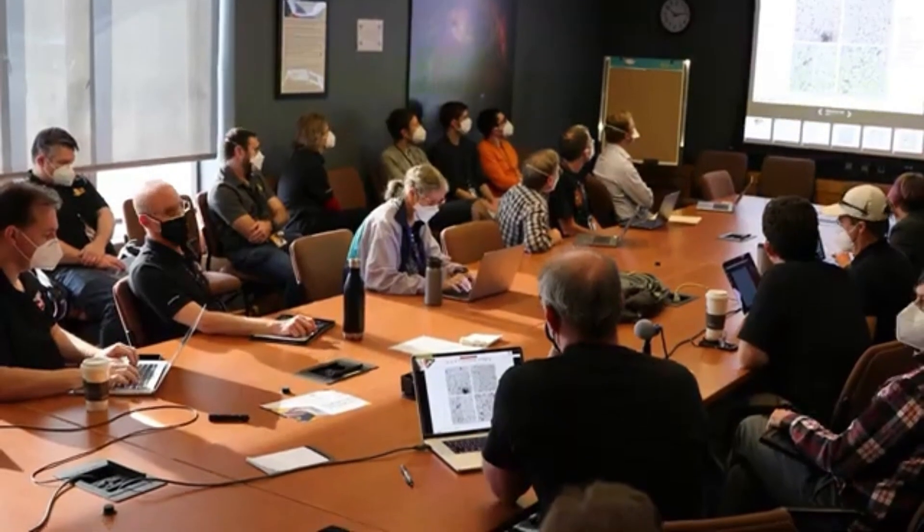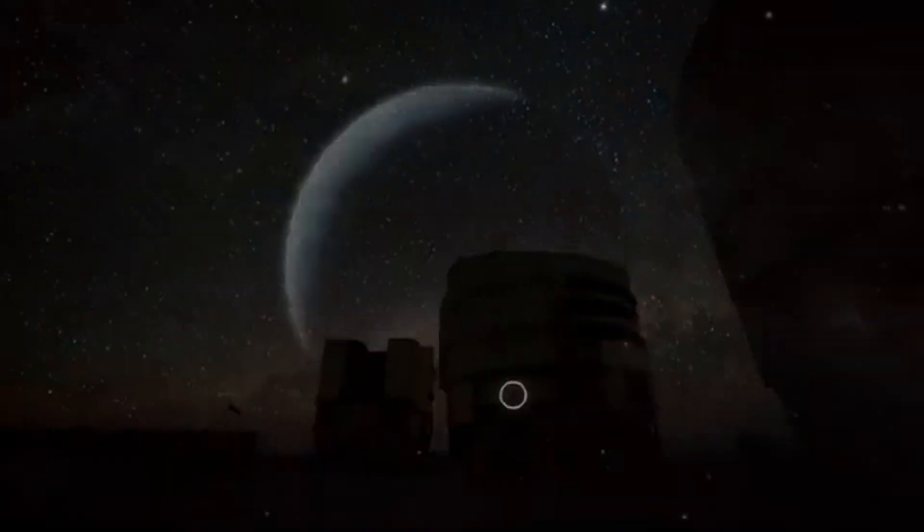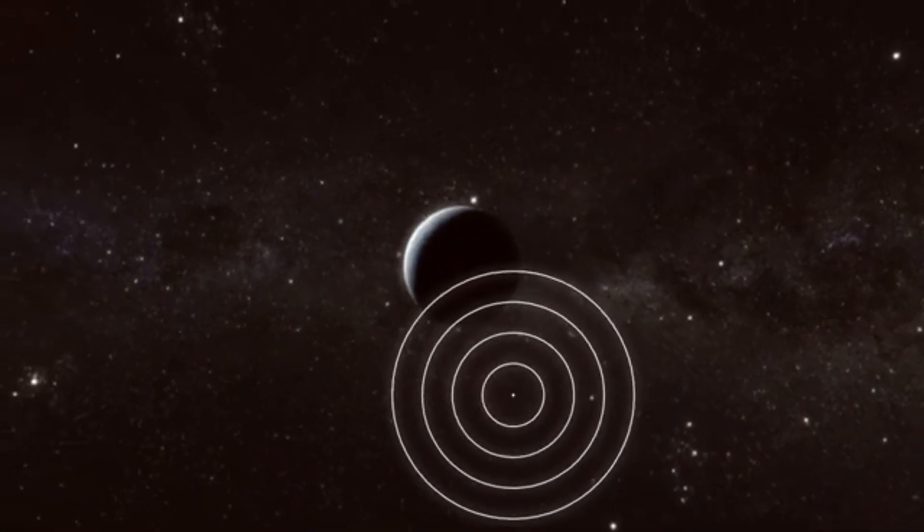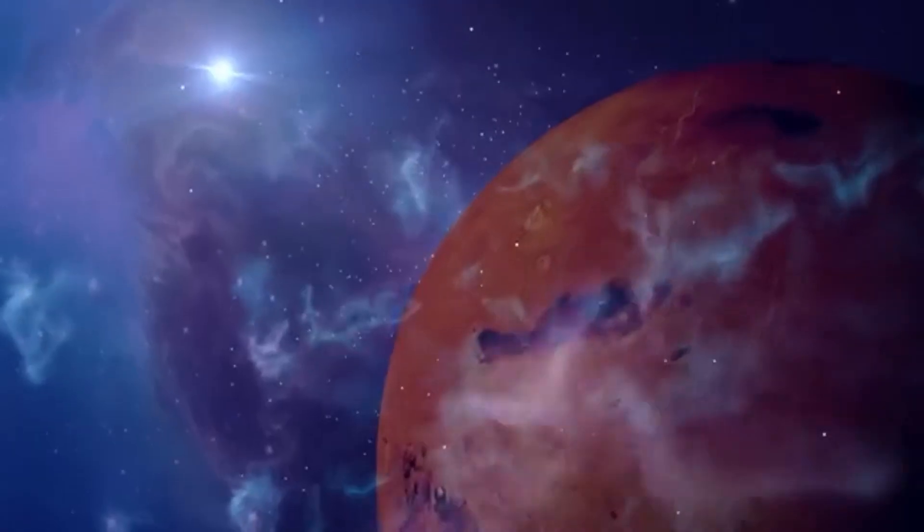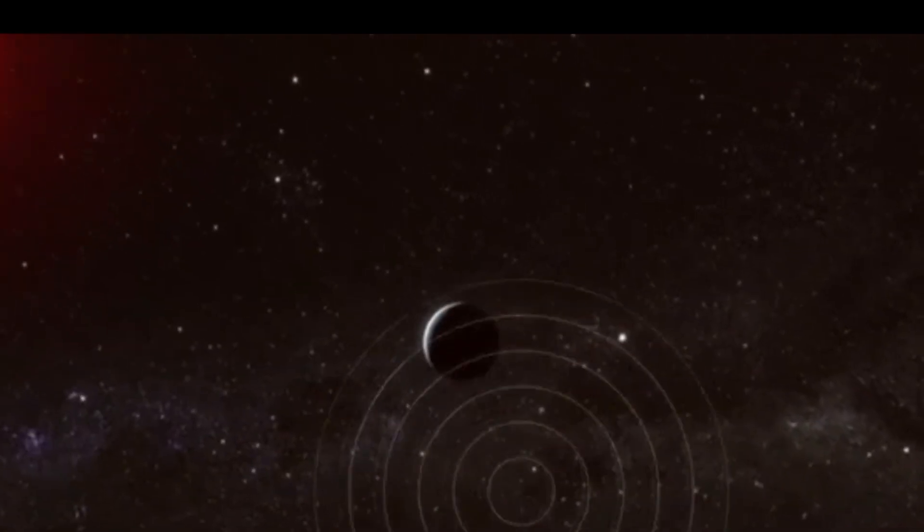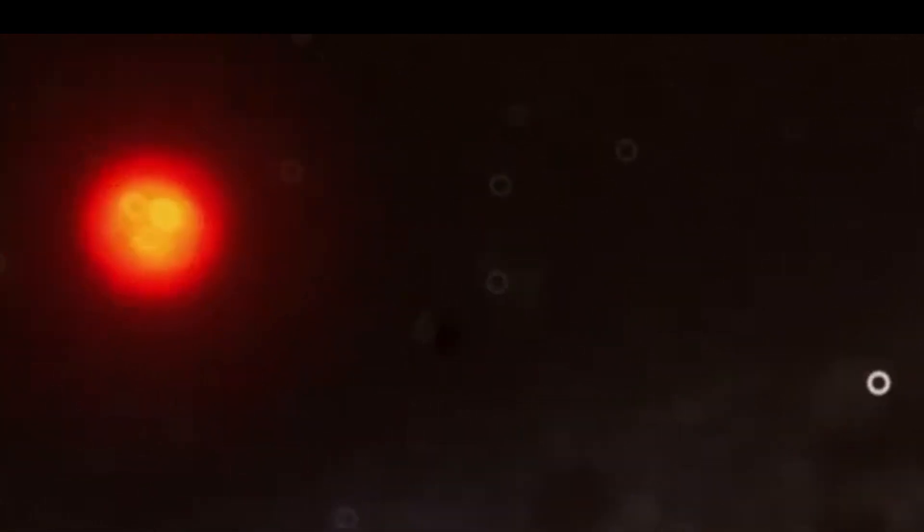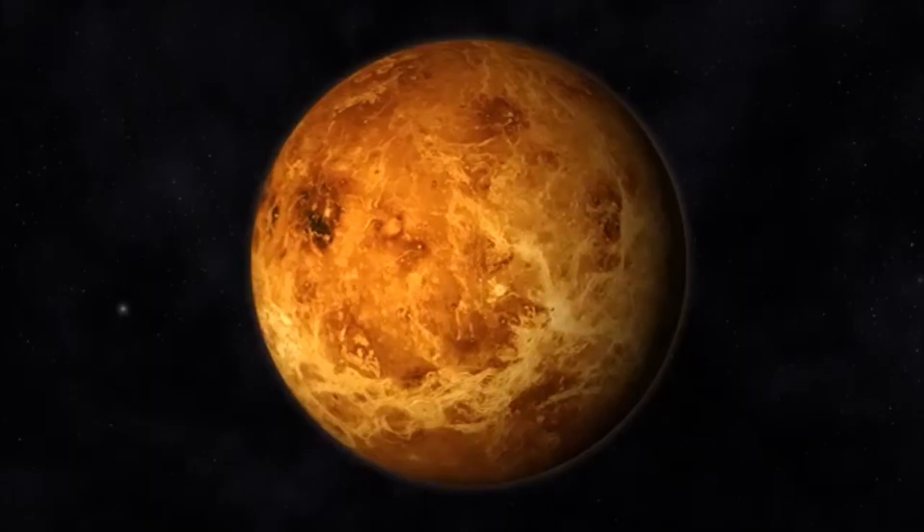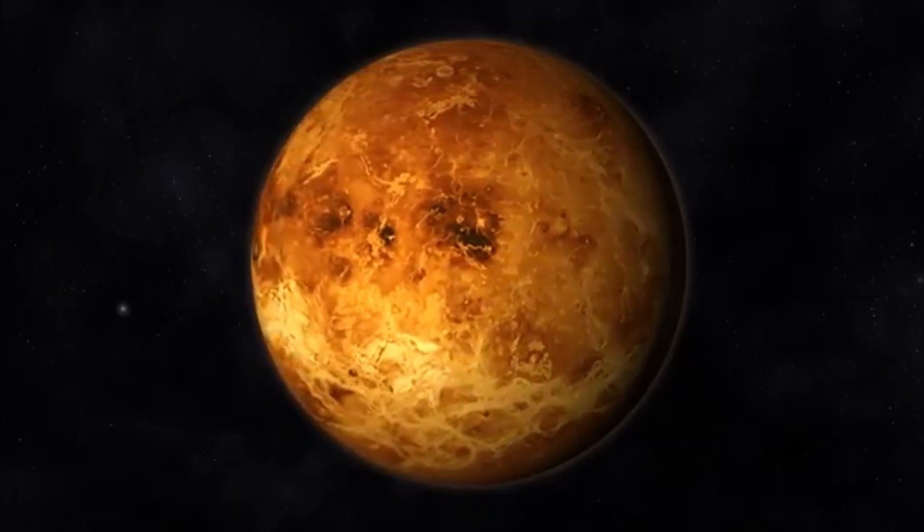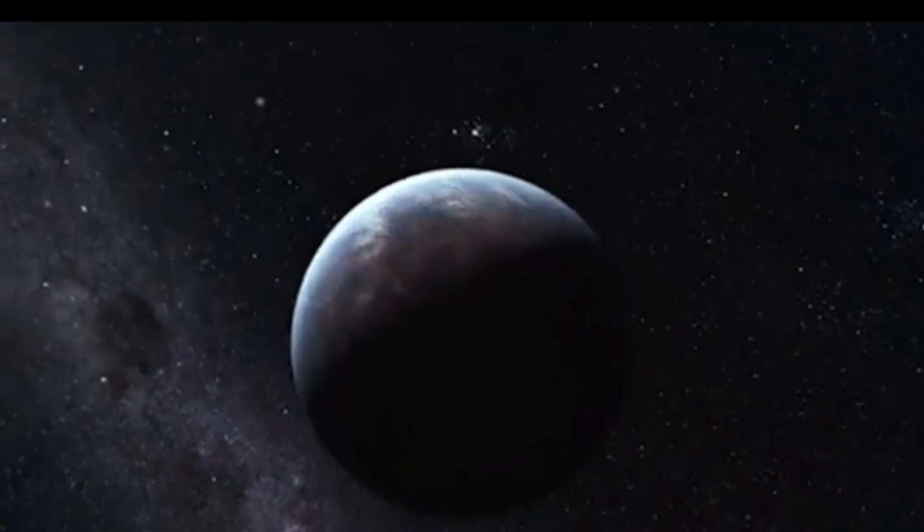Proxima b is 4.24 light-years away, making it one of the nearest known exoplanets to Earth. Its proximity makes it an ideal target for study, especially considering that many potentially habitable exoplanets are much farther away and out of reach with our current technology. The nearest star to the Sun, Proxima Centauri, orbits the companion star Proxima b.